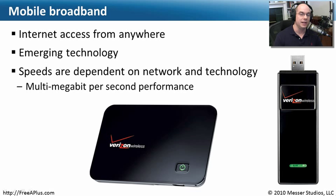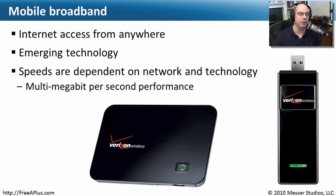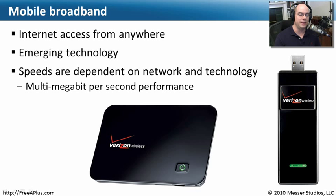The speeds you get are dependent on the technology in use, your mobile carrier, and your geographic location. Standards are rapidly changing with faster and faster speeds. One associate has a Sprint device with up to 8 megabits per second download — almost like a cable modem, faster than DSL, and all wireless. This is certainly a technology we're going to see more and more of as the years go by.